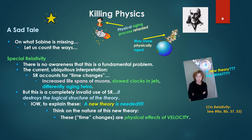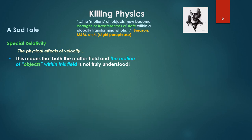But think of the nature of this new theory. These time changes, because it's not changes of time, are physical effects of velocity. Think about this. The physical effects of velocity. What does this mean? This means that both the matter field and the motion of objects within this field is not truly understood. One could even wonder. We'll take a little speculative trip for a second. This extends to Dr. Leithwaite and his gyros.